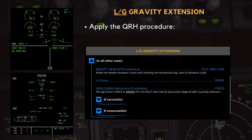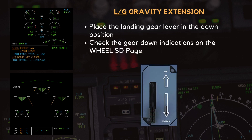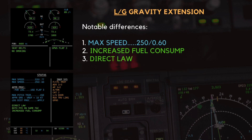Let's apply the QRH procedure. Rotate the gravity gear extension handle clockwise three times until reaching the mechanical stop. The aircraft is now in direct law. Place the landing gear lever in the down position. Check the gear down indications on the wheel SD page. At this point, the same drill can be run to clear these ECAM messages, and the status page can be reviewed. The notable differences are the maximum speed of 250 knots, the increased fuel consumption, and the aircraft being in direct law.